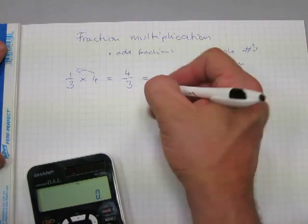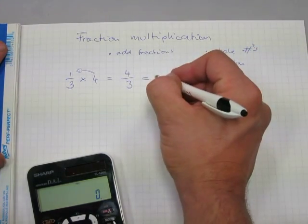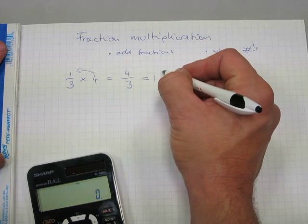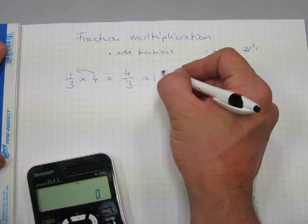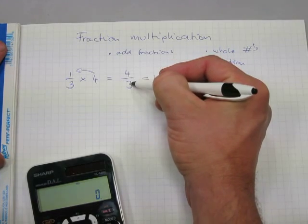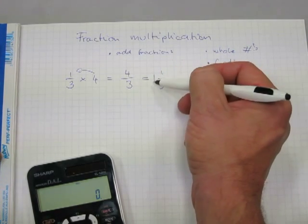If you really need to, you can convert it into a mixed number. So four-thirds is the same as one and one-third, because four divided by three is one with a remainder of one.